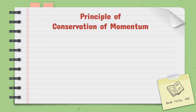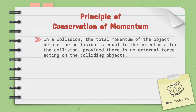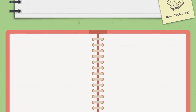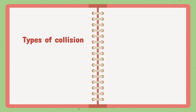Now we will start with the principle of conservation of momentum. In a collision, the total momentum of the objects before the collision is equal to the total momentum after the collision, provided there is no external force acting on the colliding objects. There are two types of collisions: one, elastic collisions, and two, inelastic collisions.